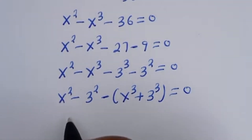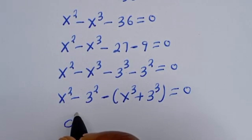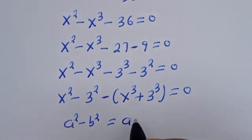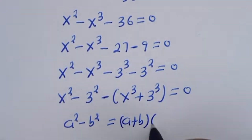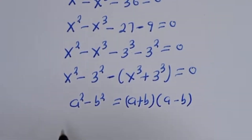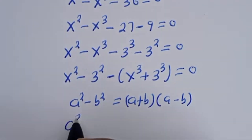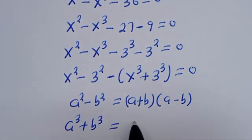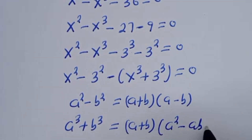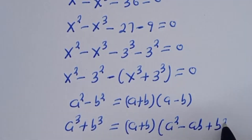Take note that if you have A squared minus B squared, this is equal to A plus B bracket A minus B. And if you have A raised to power 3 plus B raised to power 3, this is equal to A plus B bracket A squared minus AB plus B squared.